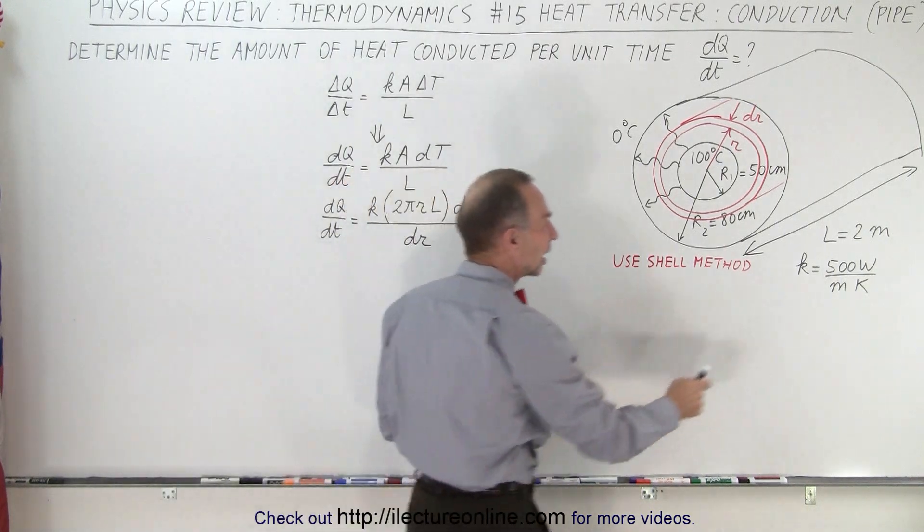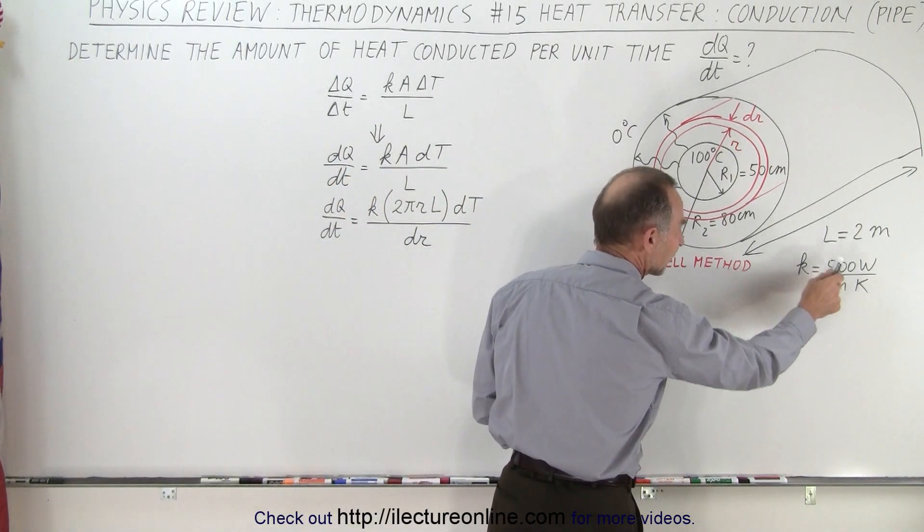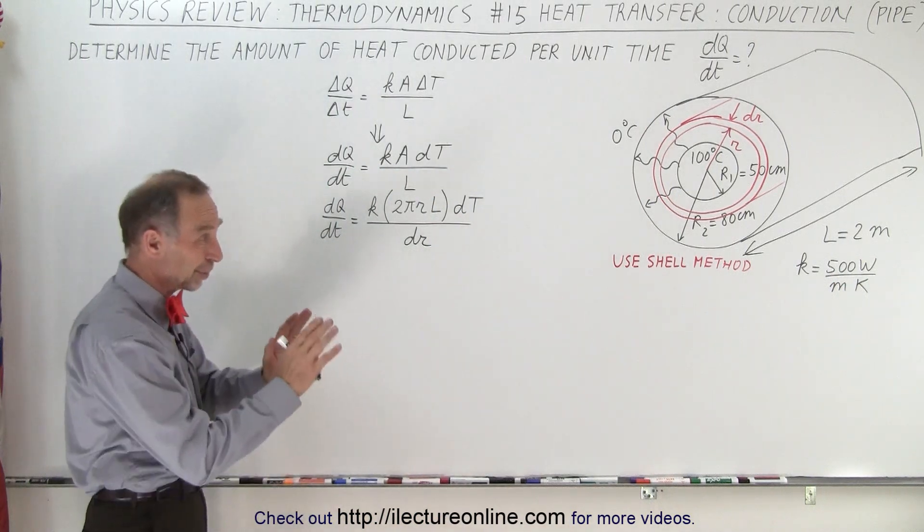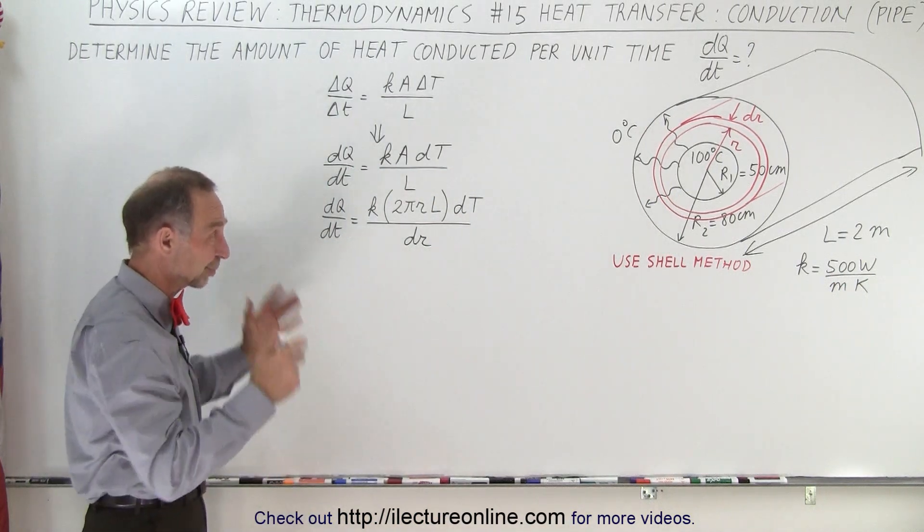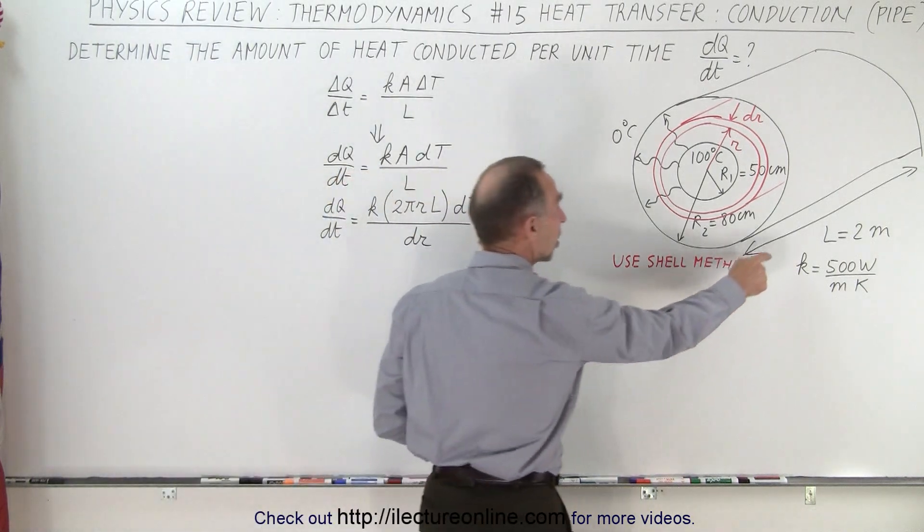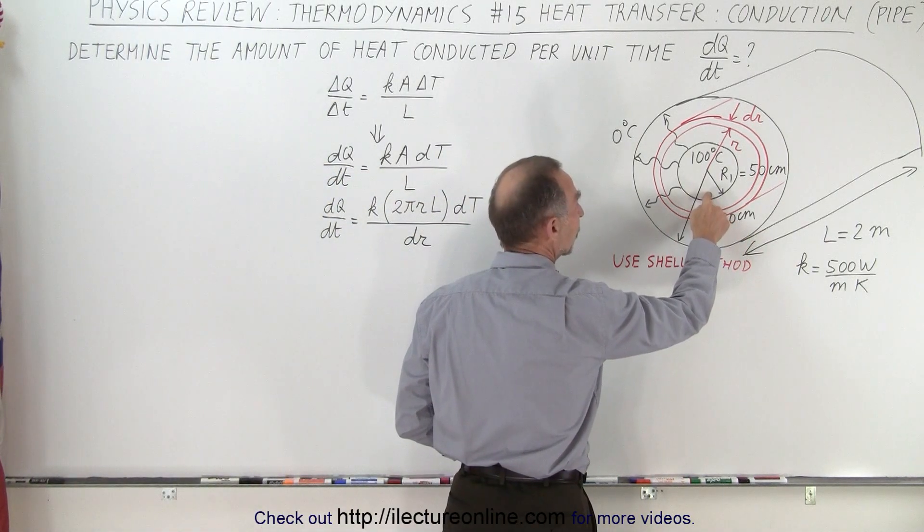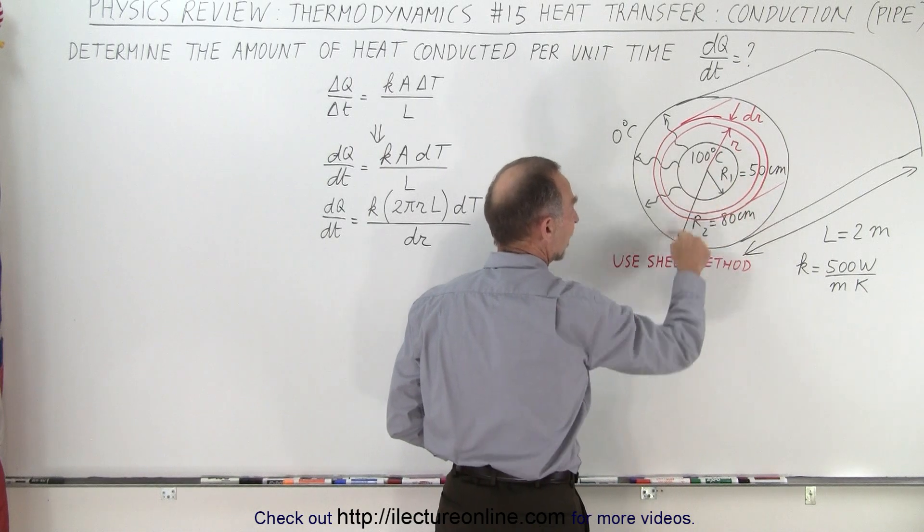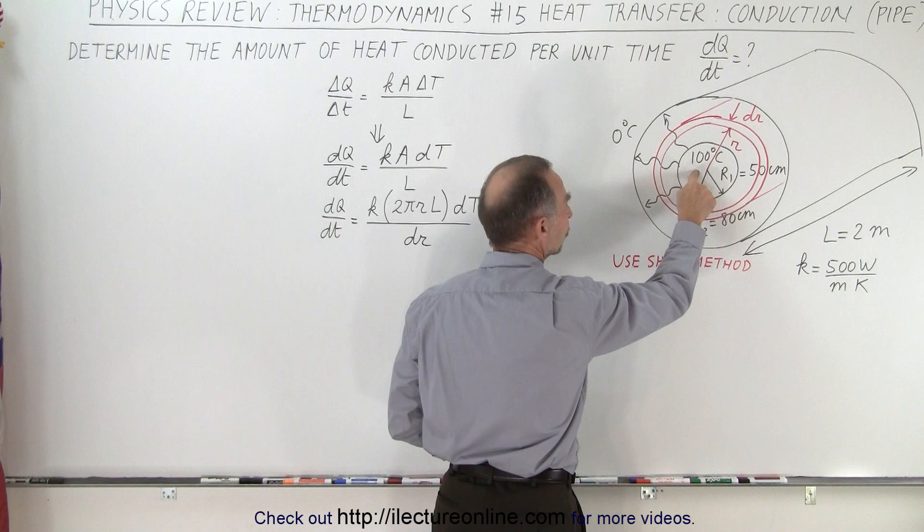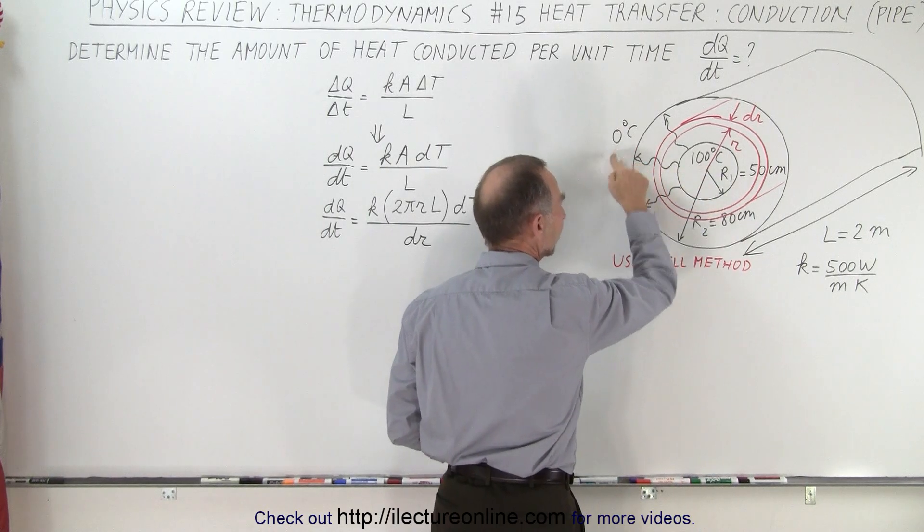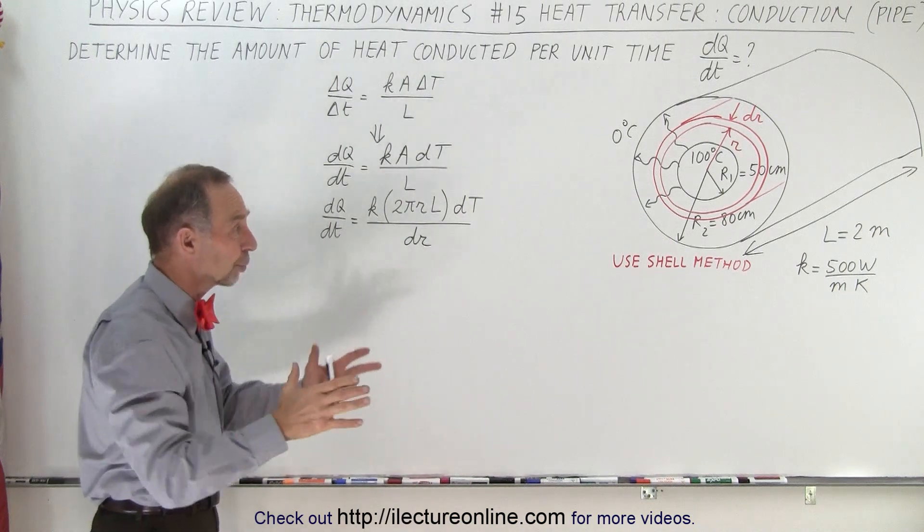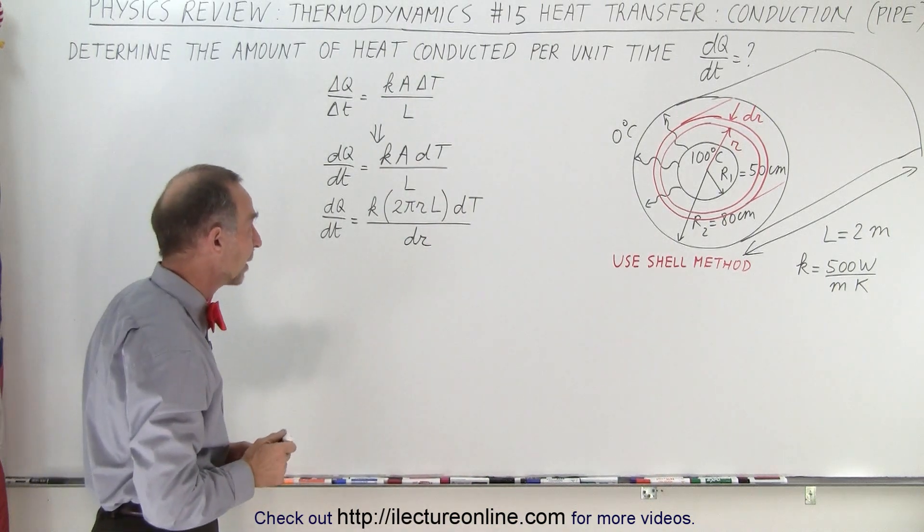If we're given that the insulation has a conductivity constant of 500 watts per meter per Kelvin—which is not good insulation, it should be much smaller, but we'll just pick a number—we have a pipe that is 2 meters long. The inner radius is 50 centimeters, the outer radius of the insulation is 80 centimeters, the inside temperature is kept at 100°C, the outside is at 0°C, and we want to know how much heat is lost through this two-meter section.